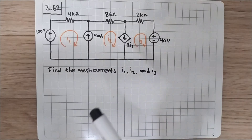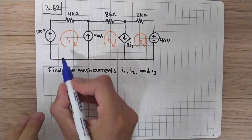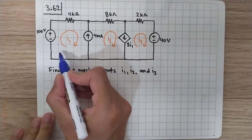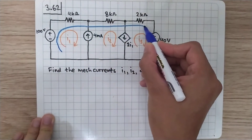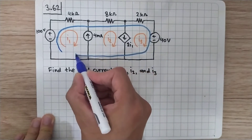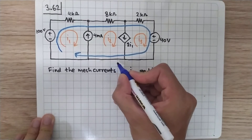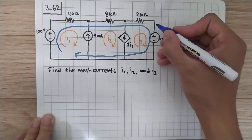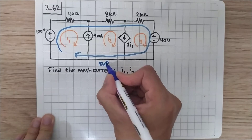Because there are two current sources, we need to do super loop analysis. The super loop is very big here — it starts from here and goes all the way through, covering both current sources. Let's name this the super loop.